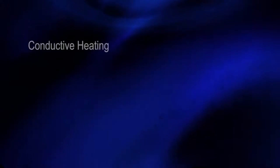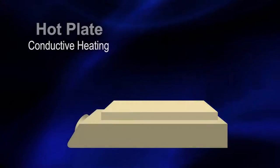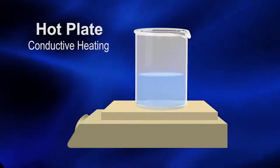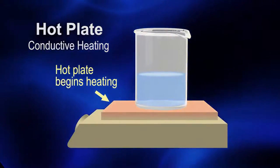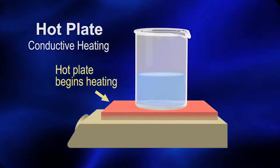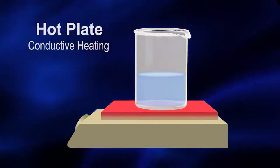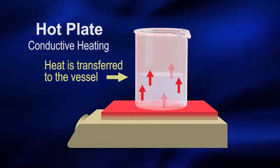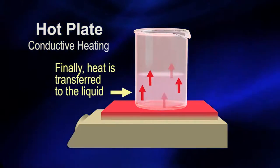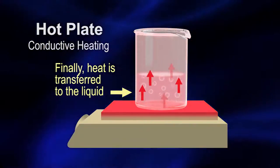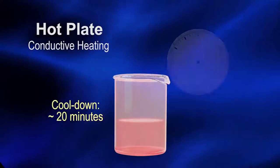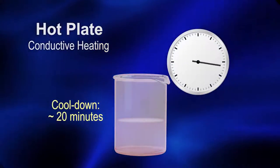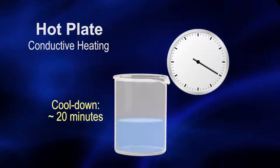Now let's compare heating a solution conductively using a hot plate to heating volumetrically using a CEM microwave. With a hot plate, the chemist first needs to wait for the plate to warm up to the desired temperature. After that, heat must slowly be transferred through the glass vessel until it finally reaches the reaction solution. This is a highly inefficient and slow process. Once the reaction is finished, the vessel is removed from the hot plate and set aside. The chemist must then wait a while for it to cool down.